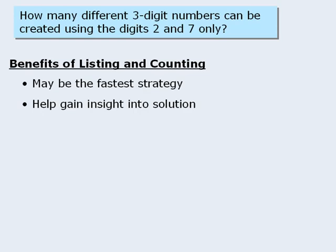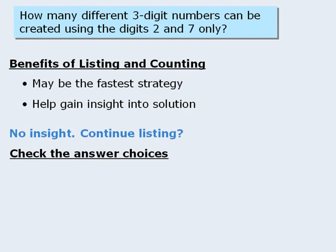Now, let's say that we begin listing outcomes and in the process we fail to gain any insight into a faster way to solve the question. At this point, should we continue listing possible outcomes? Well, to answer this question, we must first examine the answer choices.